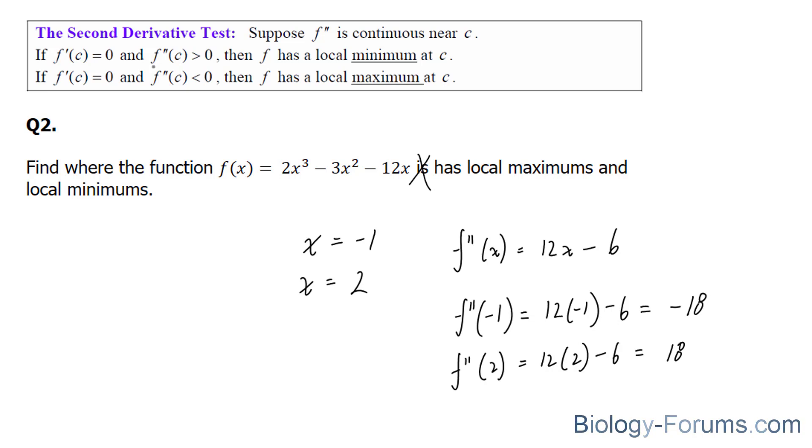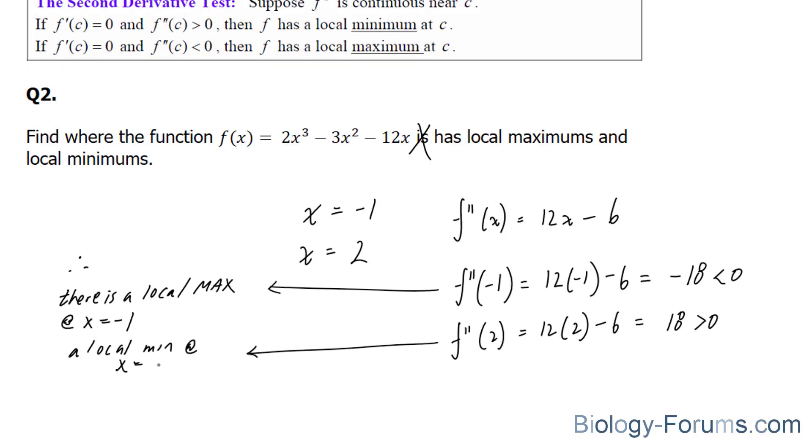So what does the second derivative tell us? This number right here is less than 0, and this one is greater than 0. Therefore, there is a local maximum at x equals negative 1 and a local minimum at x equals 2.